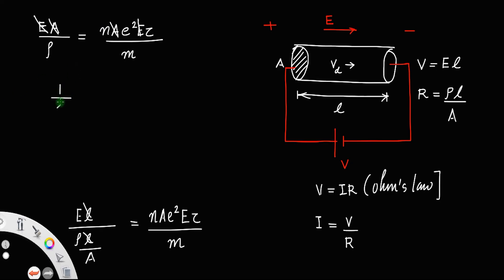So that 1 by ρ will be ne²τ divided by m. Implies the resistivity ρ will be, taking the reciprocal on both sides, m by ne²τ. So this is the expression for resistivity in terms of relaxation time.